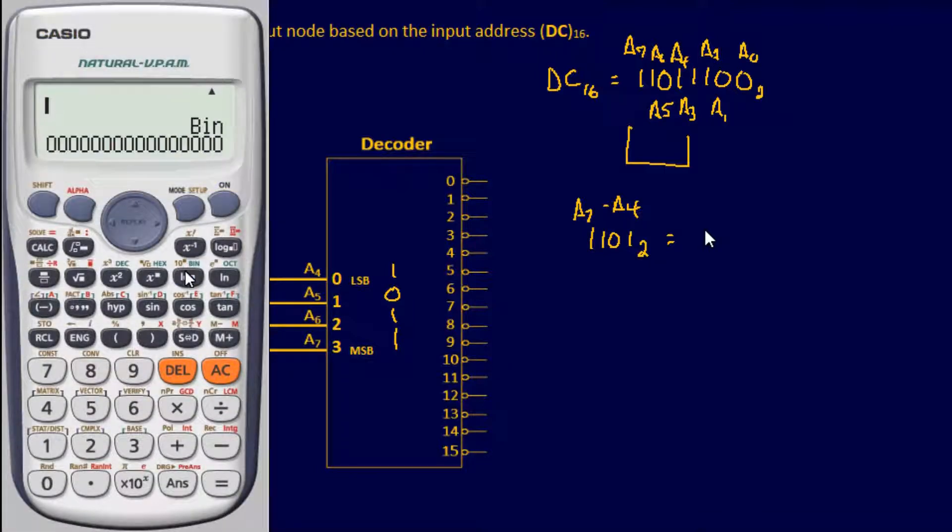And again, you can use your calculator for that one as well. 1, 1, 0, 1, it's kind of funny, because it used the same binary number in our last example,